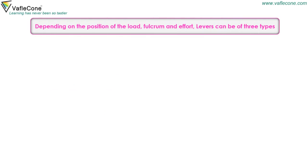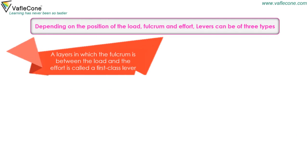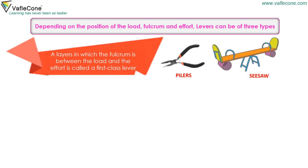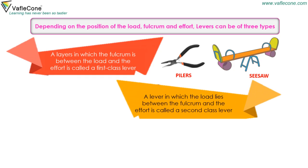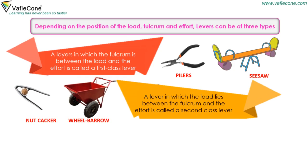Depending on the position of the load, fulcrum, and effort, levers can be of three types. A lever in which the fulcrum is between the load and effort is called a first class lever. A lever in which the load is between the fulcrum and effort is a second class lever. For example, a nutcracker and a wheelbarrow.